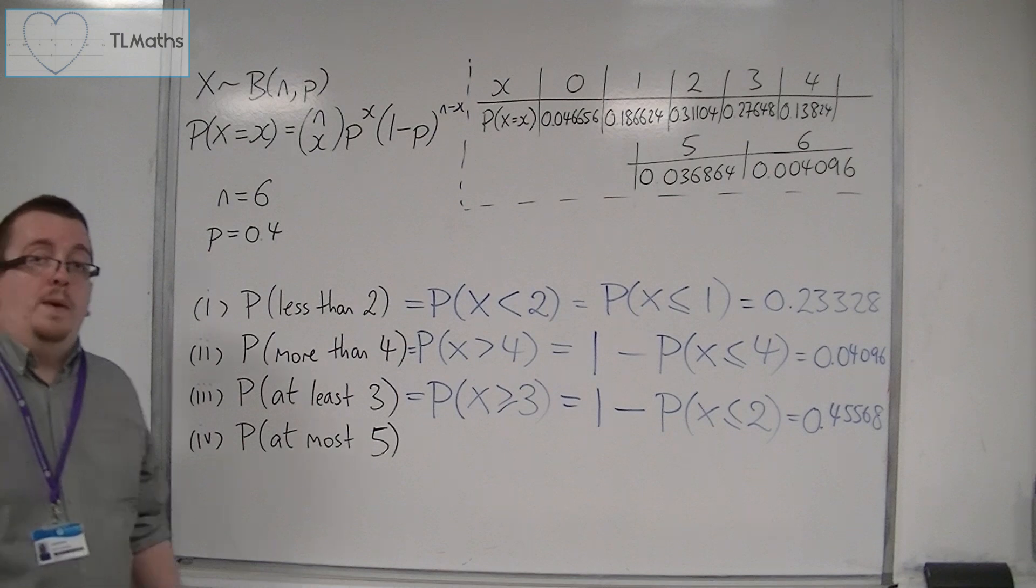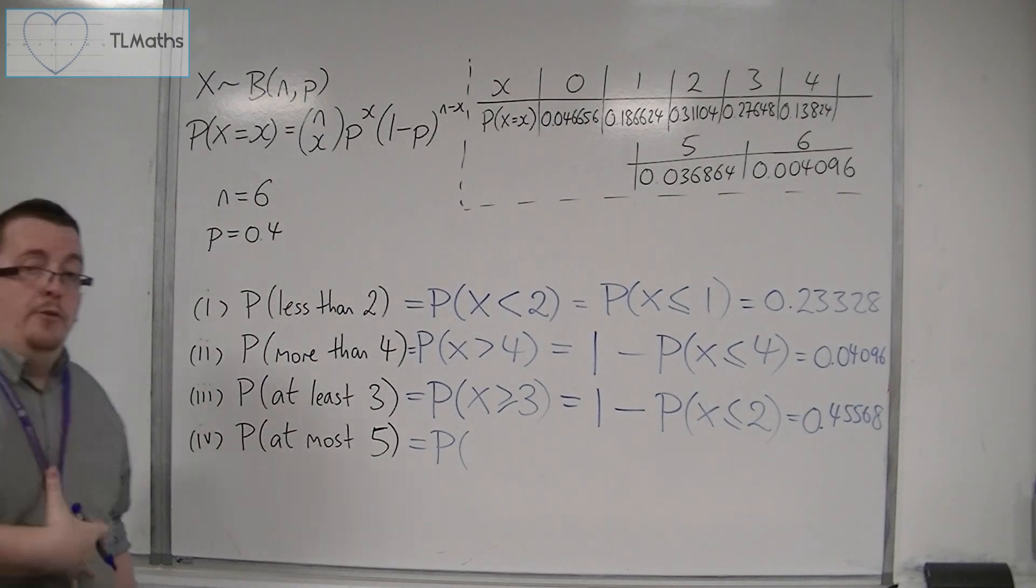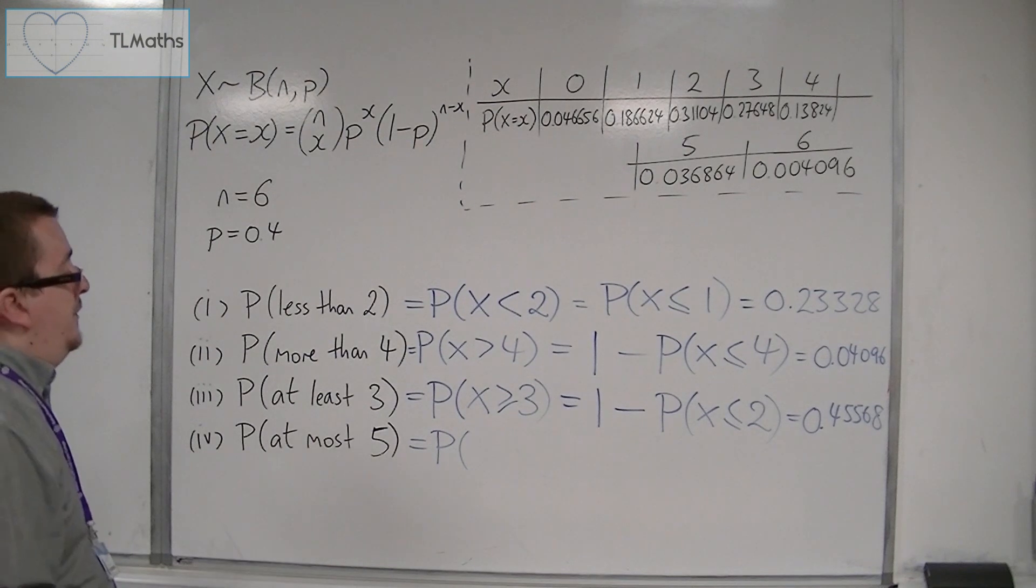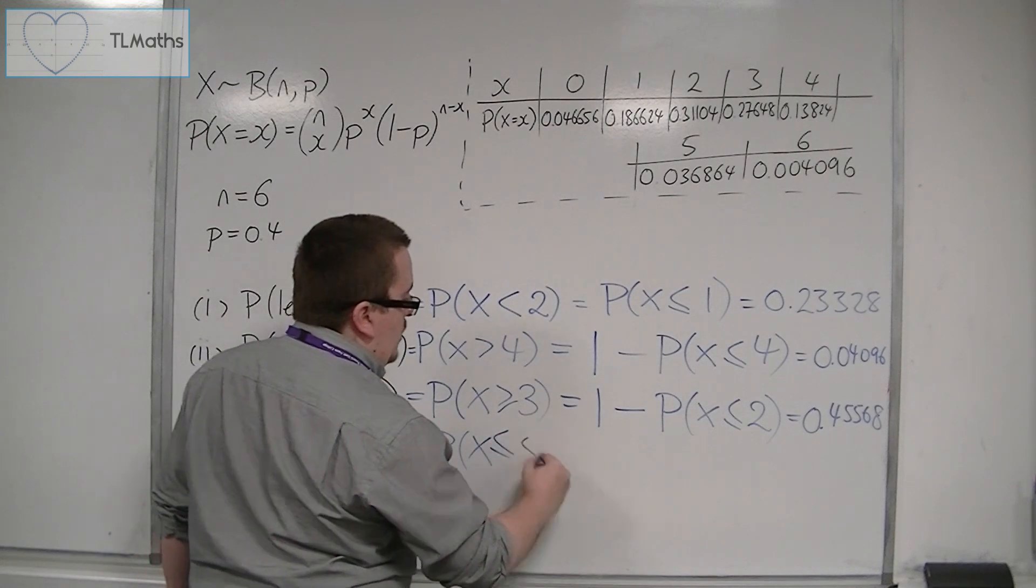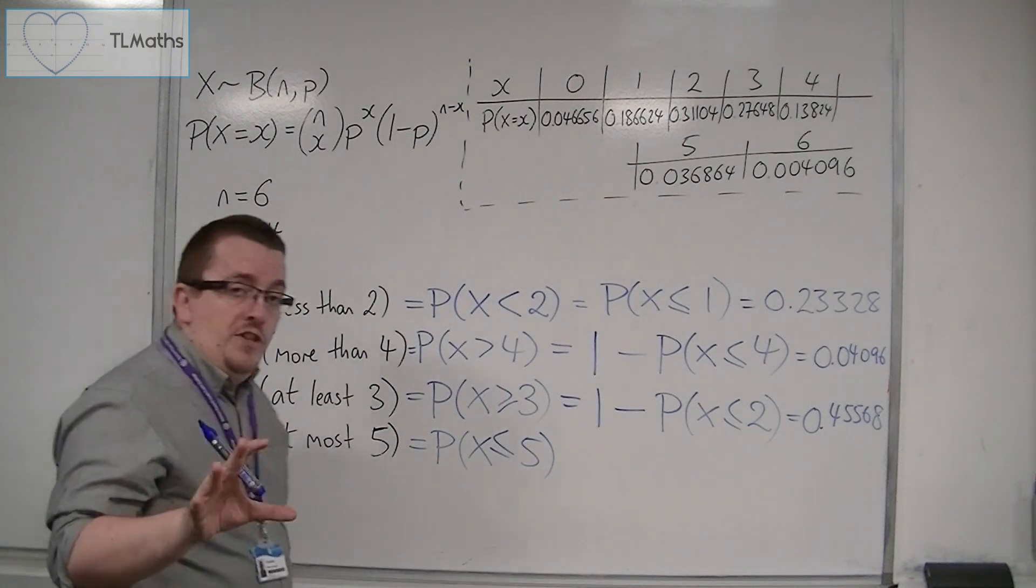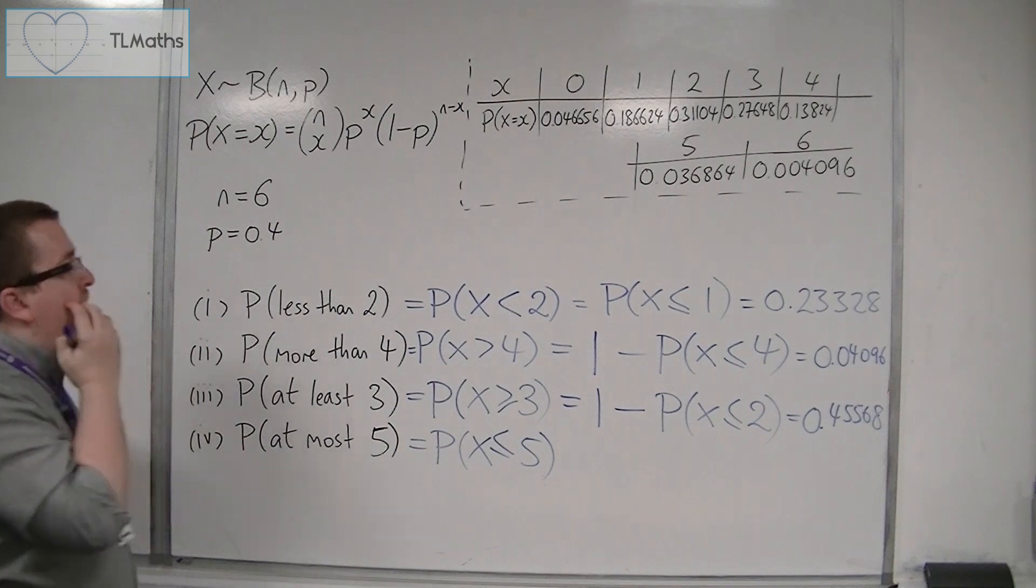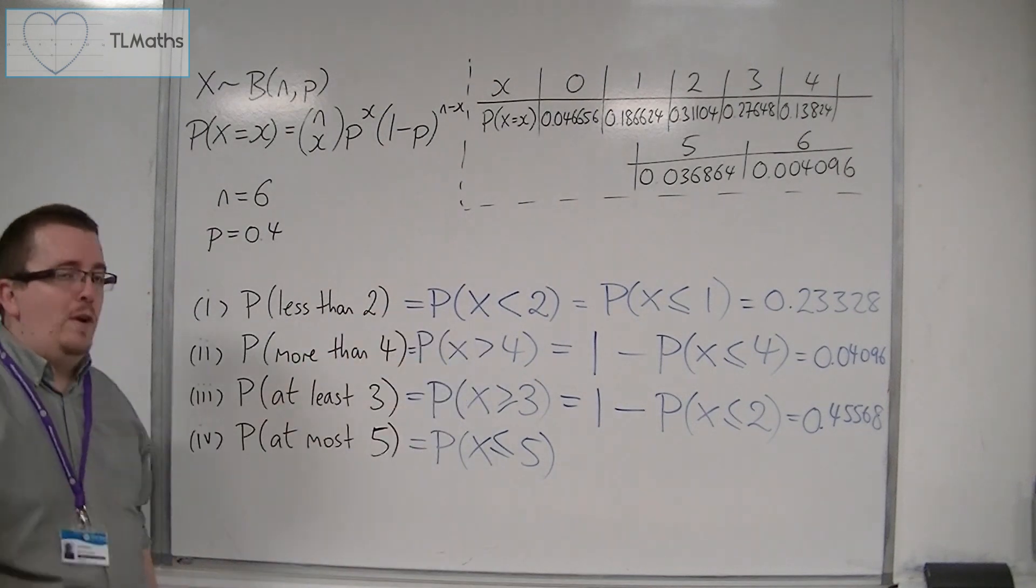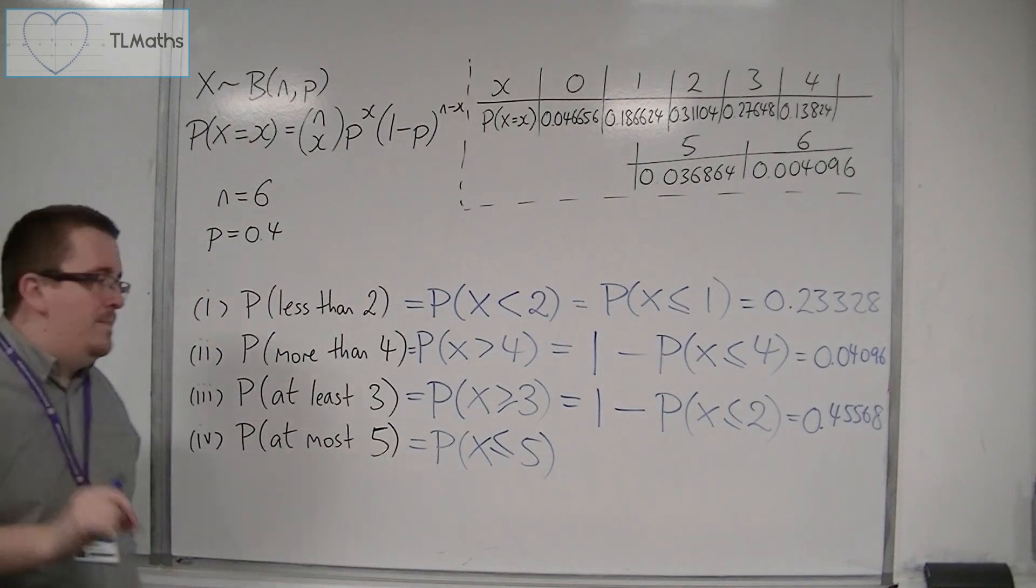Then we've got the last one, at most 5. So what could that mean? I want at most 5 and no more. That's effectively what that's saying. So I want anything that is less than or equal to 5. Now can you notice that in both of these cases we had distinct inequalities, strictly less than or strictly greater than. Here we've got greater than or equal to and less than or equal to. So keep that in mind.